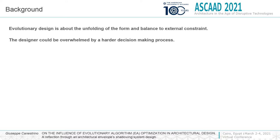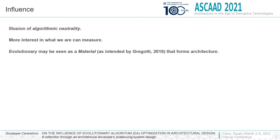However, at the end of the application of an evolutionary algorithm, the designer could be overwhelmed by a decision-making process much harder than exploring the design space without an evolutionary algorithm. But an optimized solution doesn't mean a quality architecture. A change in our vision of the so-called algorithmic neutrality will be a future challenge.